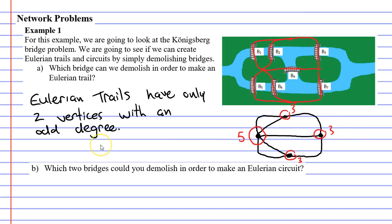For our response to A, we're going to say any of the seven bridges. You can demolish any single one of them. Let's now move on to question B. This time we're going to demolish two of the bridges in order to make an Eulerian circuit. An Eulerian circuit has every vertex with an even degree.